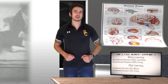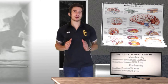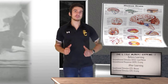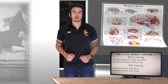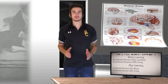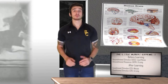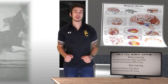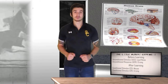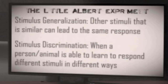Little Albert learned the fear response through acquisition, which is just the first stage of learning when a response is established. Through his research, Watson also came up with the idea of stimulus generalization and discrimination. Watson found that after conditioning took place, Albert showed a fear response to stimuli that were similar to the white rat.